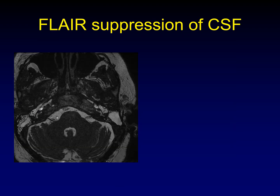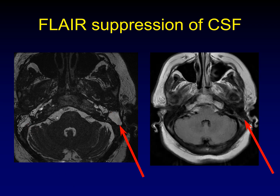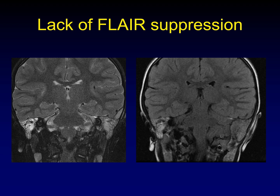When evaluating a dehiscent tegman, look for bright T2 signal inside the tympanic cavity. But how do you distinguish CSF from inflammatory fluid? FLAIR is your friend: if the T2-bright material suppresses on FLAIR, it's CSF. Even a tiny bit of protein prevents FLAIR suppression, so inflammatory debris remains bright on FLAIR, while CSF disappears. Here's the counterexample — inflammatory debris in the mastoid air cells bilaterally stays bright on FLAIR because it's proteinaceous, not CSF.